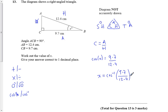The easiest way to do it is do the 9.7 divided by 12.4, leave the answer on your screen, and then just do shift cosine.